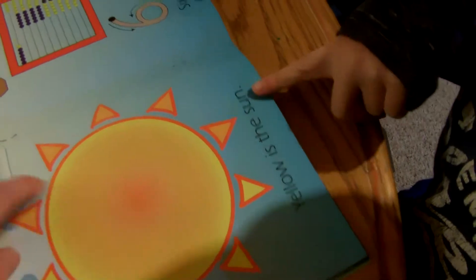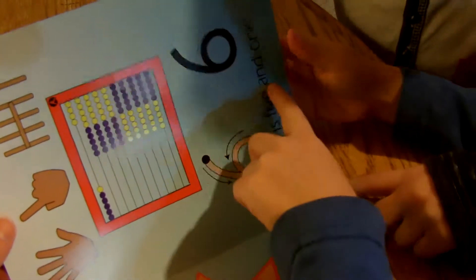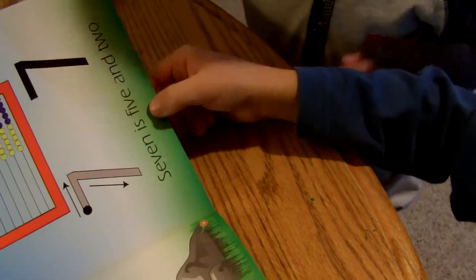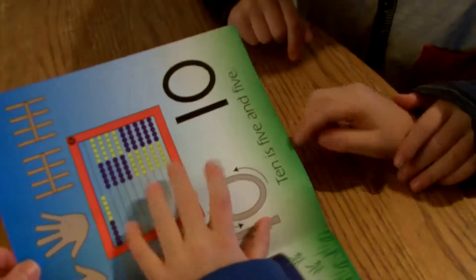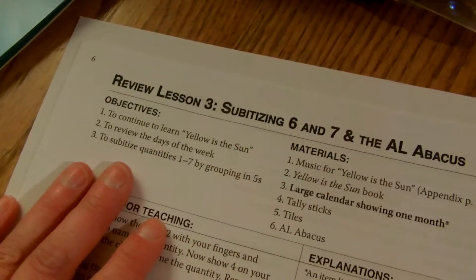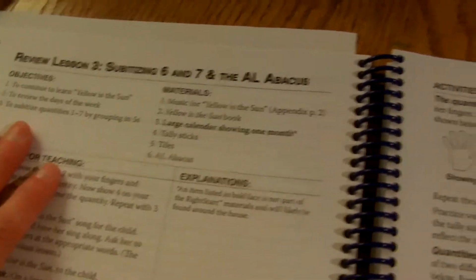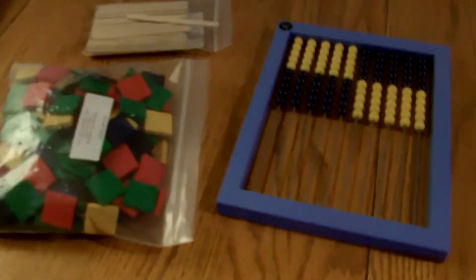Yellow is the sun. Six is five and one. White is the sky so blue. Seven is five and two. Ten is five and five. And the objectives today: we're working with the Yellow Sun book which we just read, working on the days of the week, and subitizing numbers six and seven using different manipulatives.